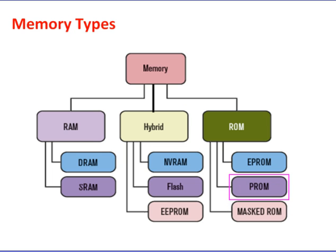PROM stands for Programmable ROM. The process of writing data to a PROM involves a special piece of equipment called a device programmer. The device programmer writes data to the device one word at a time by applying an electrical charge to the input pins of the chip. Once a PROM has been programmed in this way, its contents can never be changed. PROMs are also known as one-time programmable (OTP) devices.